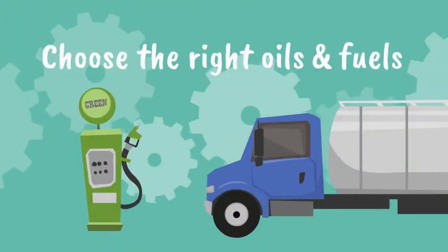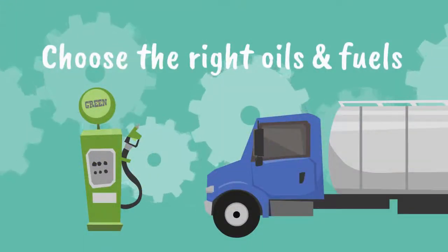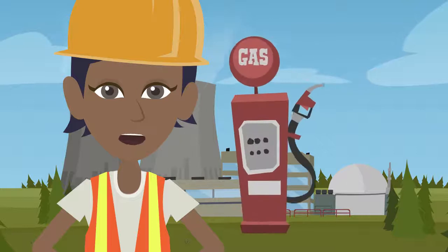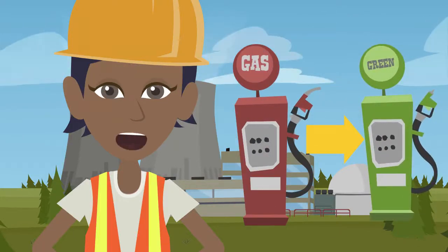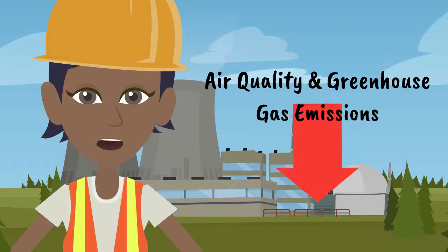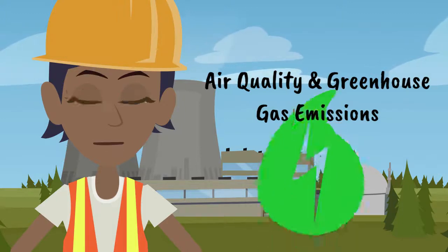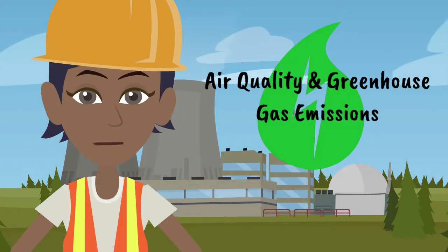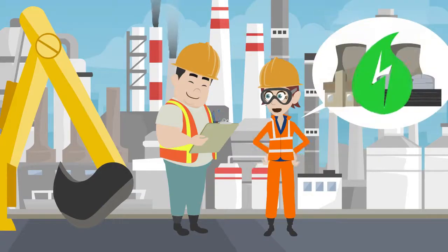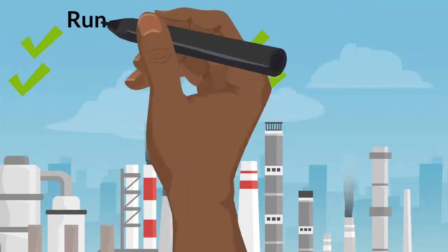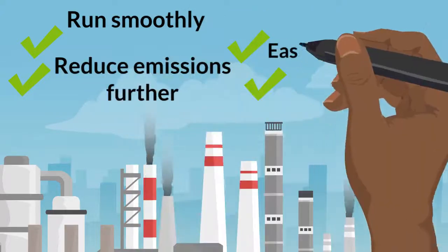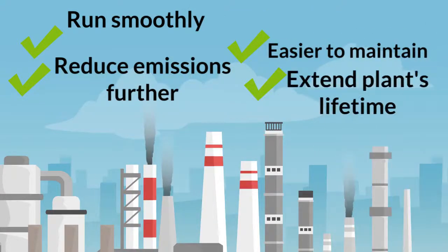Choose the right fuel and oils. There are several fuels on the market that are alternatives to conventional diesel which offer reduced air quality and greenhouse gas emissions, such as gas-to-liquid and hydrotreated vegetable oil. Speak with your supplier to select the right oil for your plant's engine. Doing so will make it run more smoothly, reduce emissions further, result in a less frequent maintenance regime, and extend the lifetime of plant overall.